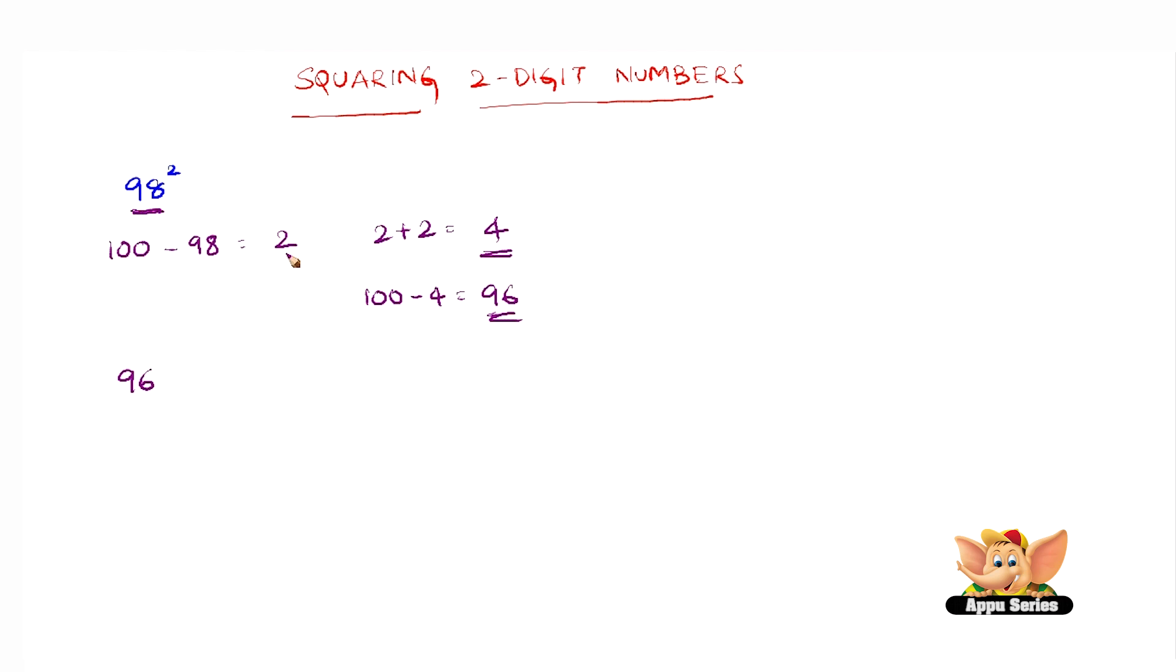So 96 becomes the first two digits of the answer of 98 the whole square. Now what we have to do is square 2, which gives us 4. Now since 4 is less than 10, place 0 before 4 and now join 04 to 96, which gives us 9604. So 9604 is the answer of 98 square.